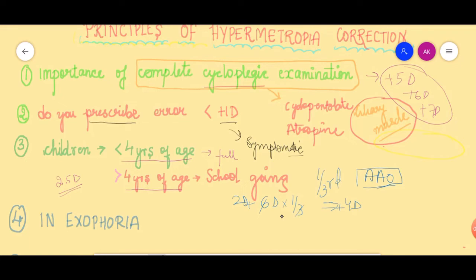The principle to remember is: a younger child can accept full correction, whereas a child who has started going to school will not be able to accept it — for them we reduce by one third. Even if an older child comes, I advise always under-correcting such kids. Once they start becoming comfortable with their prescription, gradually every three to six months you check them and slowly increase their power until they can accept the full correction.